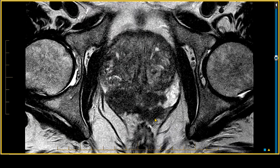The first patient is a 76-year-old male who had a history of a negative transrectal ultrasound-guided biopsy several years ago, but his PSA quickly elevated. It went from 3 to 23 in a 5-year period. So this multi-parametric MRI of the prostate was performed.